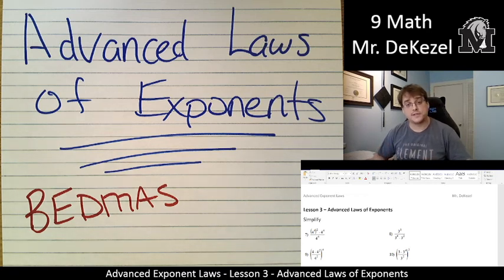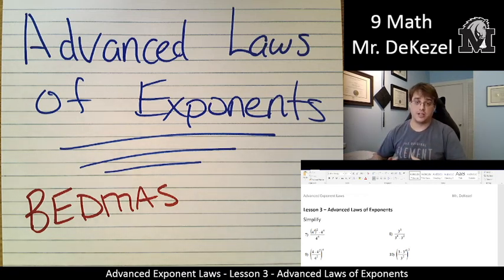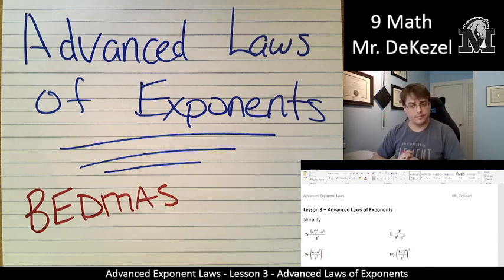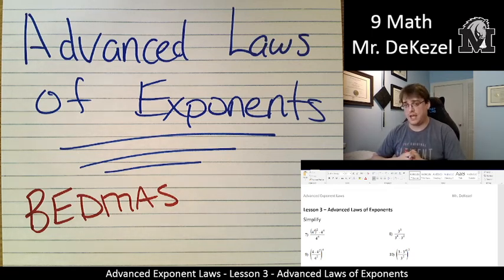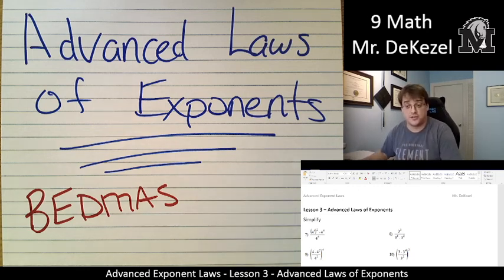We're going to do what's in the brackets first, then we're going to look for exponents. We're going to do multiplication and division, but we're going to also separate the top and the bottom like we did in the last unit. The numerator and the denominator will stay separate until close to the end. Then we do addition and subtraction last — we don't have any of that in this case, but that would go at the end.